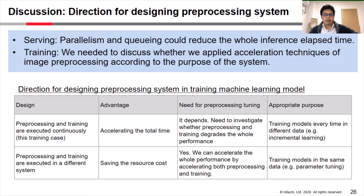The table below shows the direction for designing preprocessing systems in the training phase. We think there are two types of design patterns. One is when preprocessing and training are executed continuously. In this case, the advantage is that we can accelerate the total time. Whether we need to tune preprocessing depends on the situation, and we need to investigate whether preprocessing and training degrades the overall performance.